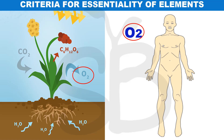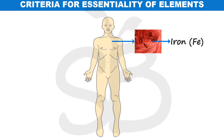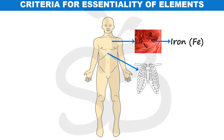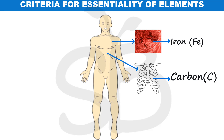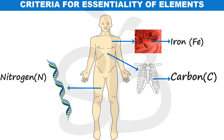Oxygen is an essential element for humans. Similarly, iron is essential in human blood. At the cellular level, carbon is a fundamental element, and our genetic material contains nitrogen bases — so nitrogen is also an essential element. Many elements are organized and essential for life.